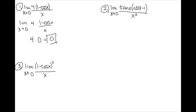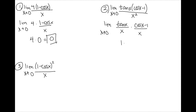For number two, I split this into tan x over x times cosine x minus 1 over x. The limit as x approaches 0 of tan x over x equals a over b, where a and b are the coefficients in front of x, so that's 1 over 1. For cosine x minus 1 over x evaluated as x approaches 0, I get 0 from the formula we just talked about. So my answer here is 0.